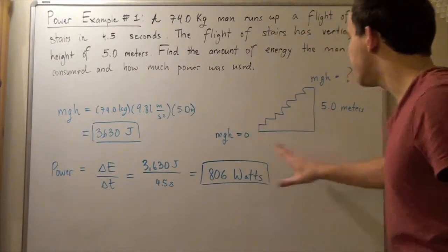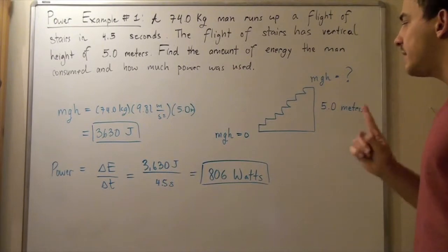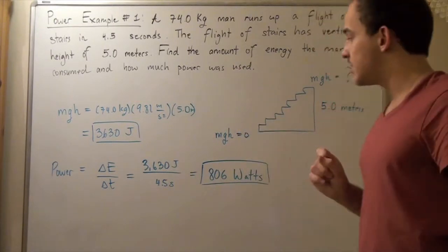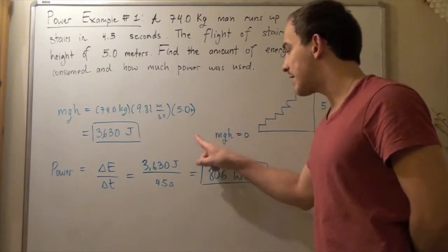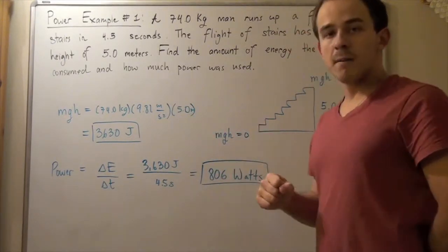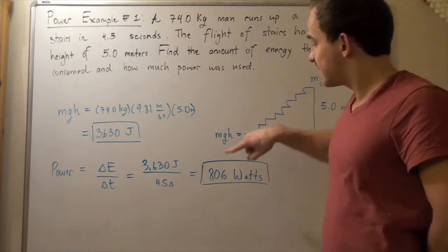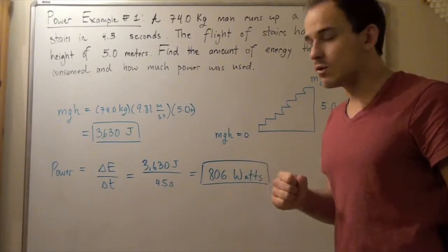Let's begin by looking at the following diagram. Our man begins at the initial position of height equals zero. That means our initial gravitational potential of our person is zero because the h is zero, so mgh is zero.